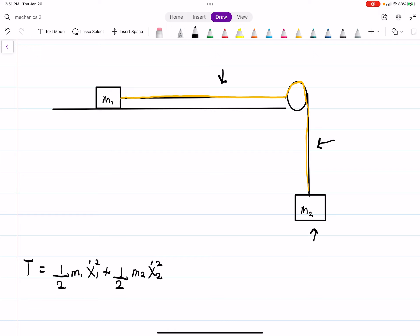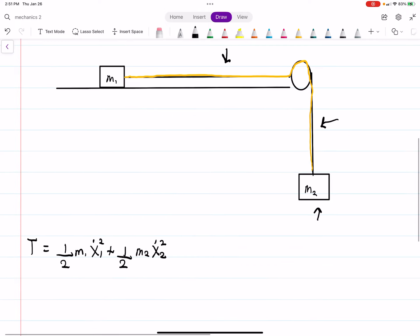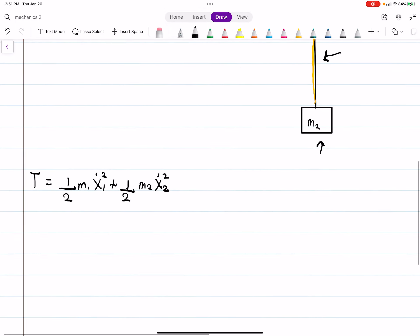They're really not that different, even though one's hanging and the other's not. So our kinetic energy is just the sum of the two, 1 half M1 X1 dot squared plus 1 half M2 X2 dot squared. Hopefully that makes sense.